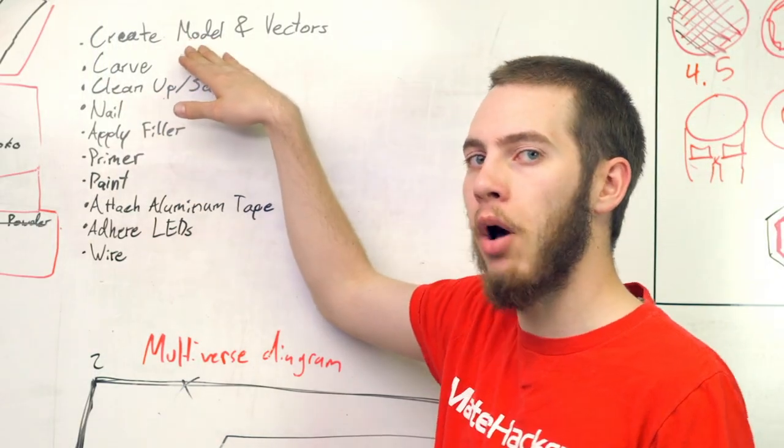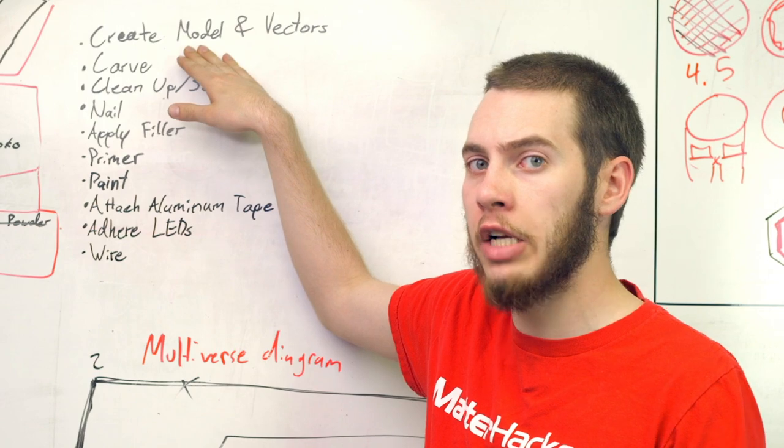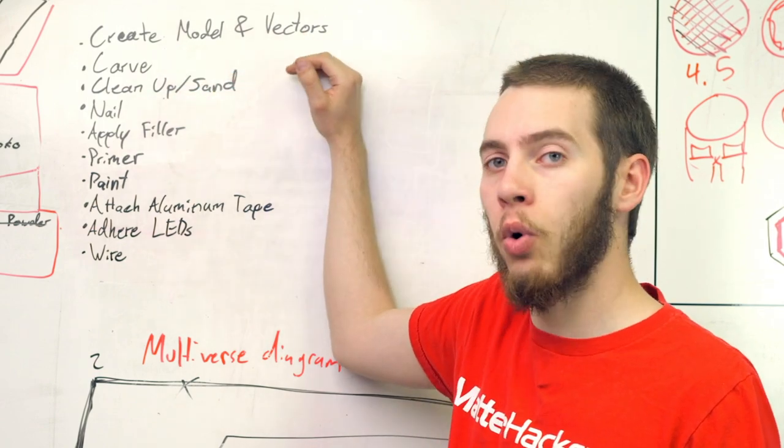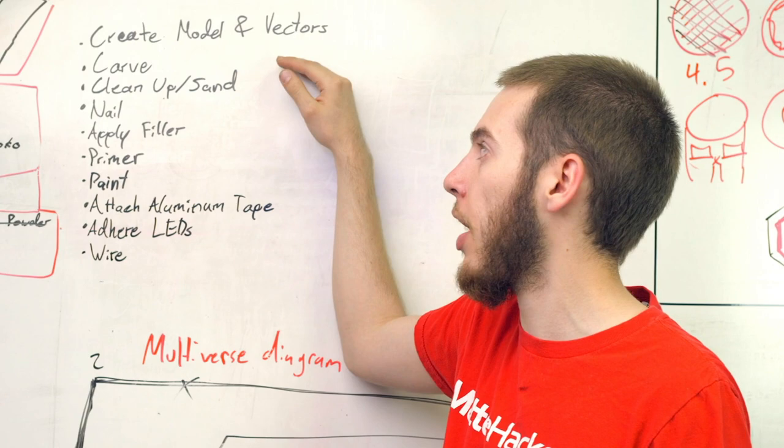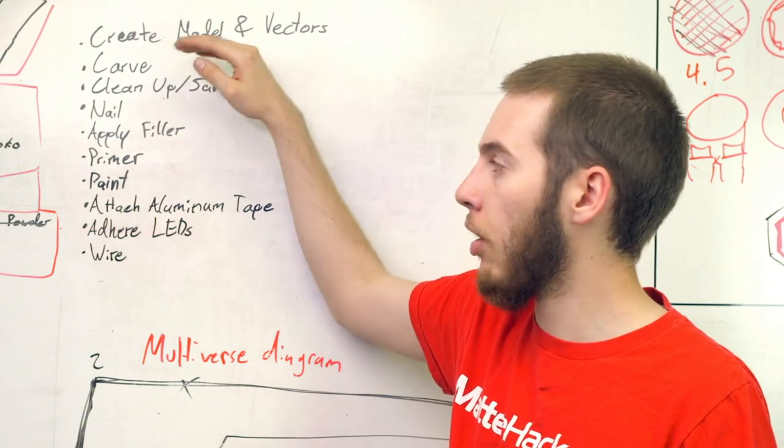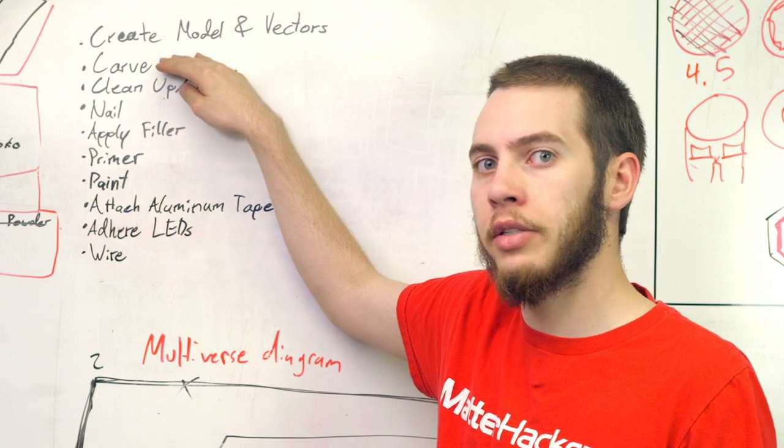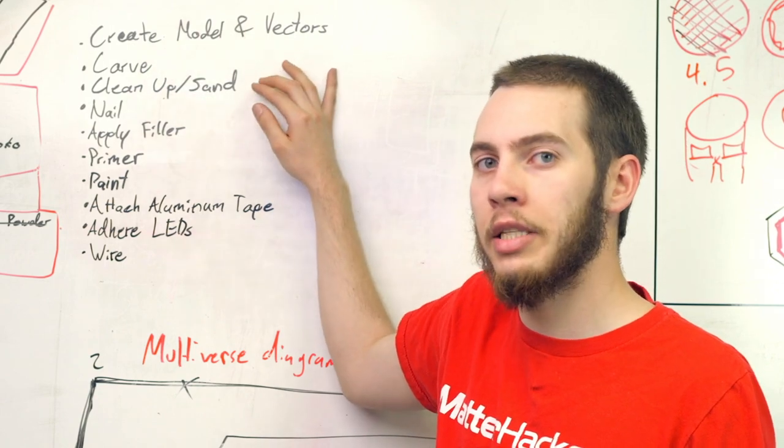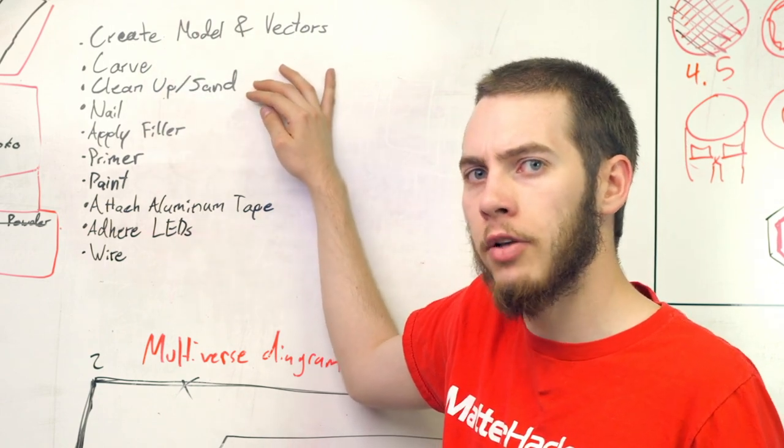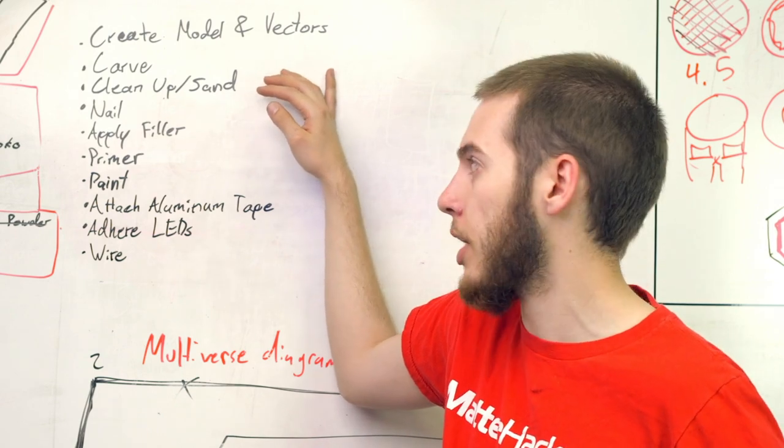First thing I need to do is create the model in Fusion 360 of the actual sign. Then I can use the Shaper Origin plugin to export certain faces as vector files. And with those vector files, I can carve them on the Shapoko XXL. And once those carvings come off, I'm going to need to do some cleanup and sanding, just with some sandpaper and some files to get rid of any burrs or tabs from the actual carving process.